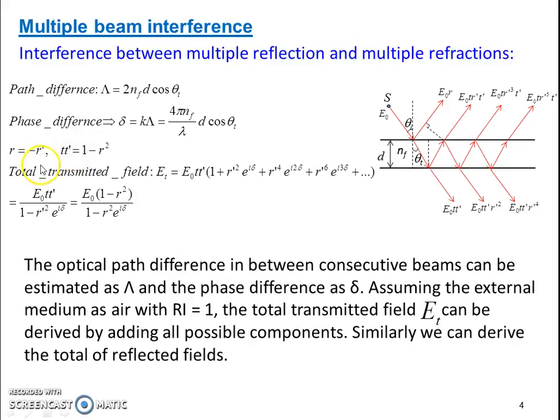With these assumptions we can find the total transmission field which is the summation of all components, all multiple components in a series form. If we include the phase terms with each case, which is delta, we can find the value of E0 (1 minus R square) divided by (1 minus R square e to the power i delta).